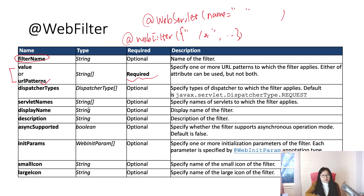You can also have dispatcher types — do you remember? In XML we have a dispatcher tag. Here you can have REQUEST, INCLUDE, FORWARD, and ASYNC. The default is REQUEST, so if it's a request you don't need to specify the value.